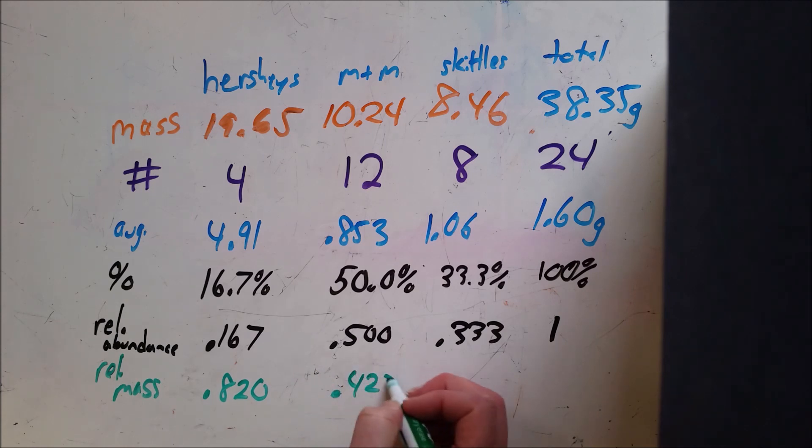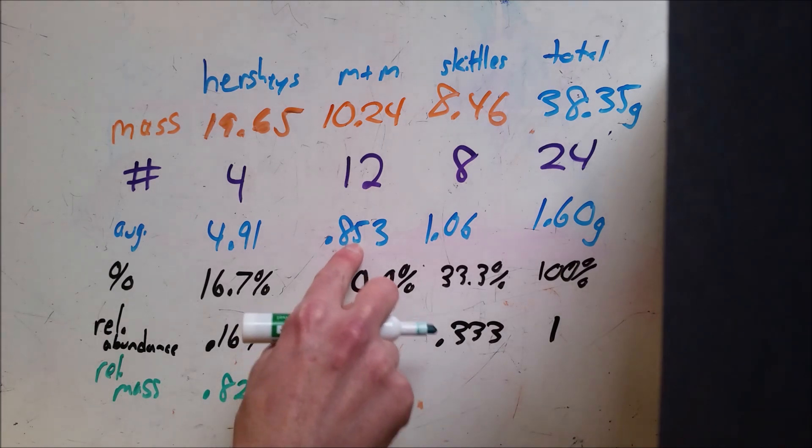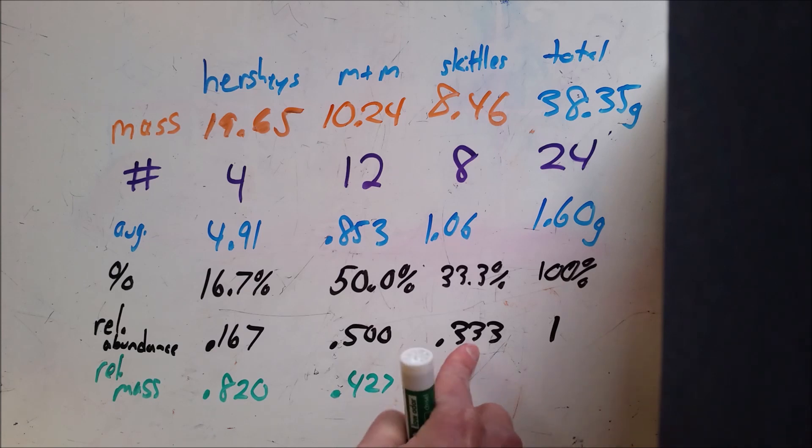This one comes out to 0.427 for 0.5 times this average for M&Ms. And then 0.333 times 1.06 comes out to 0.353. Now what these are, if you had one piece of